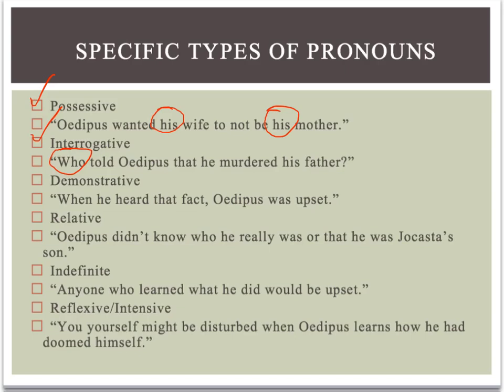The next category of pronouns we're going to talk about are demonstrative pronouns. Demonstrative pronouns demonstrate — they point to specific objects. When we hear a speaker using a demonstrative pronoun, we hear them pointing to specific things: this, that, these, those, those other ones. So in this sentence, when he heard that fact, Oedipus was upset — there's one demonstrative pronoun. It's the pronoun that. The speaker is pointing to a particular fact, that one. In this case, the antecedent is he murdered his father — that's a specific fact being pointed to by the demonstrative pronoun that.